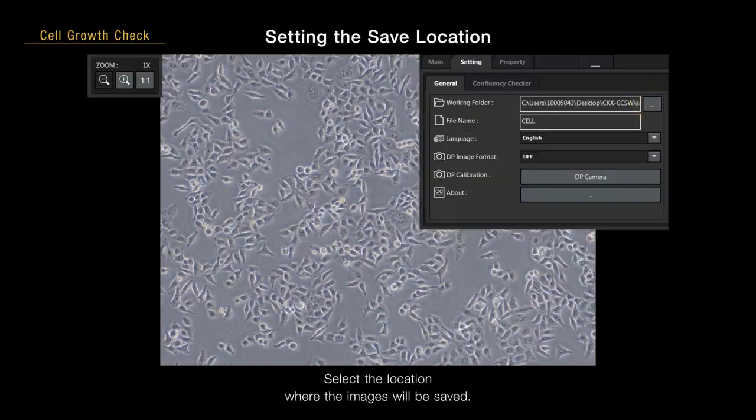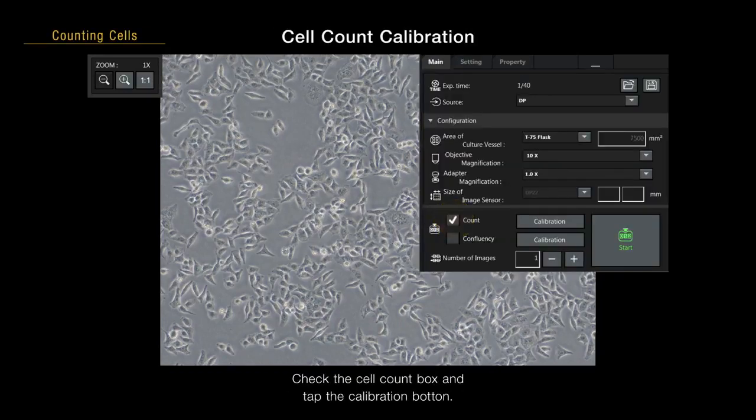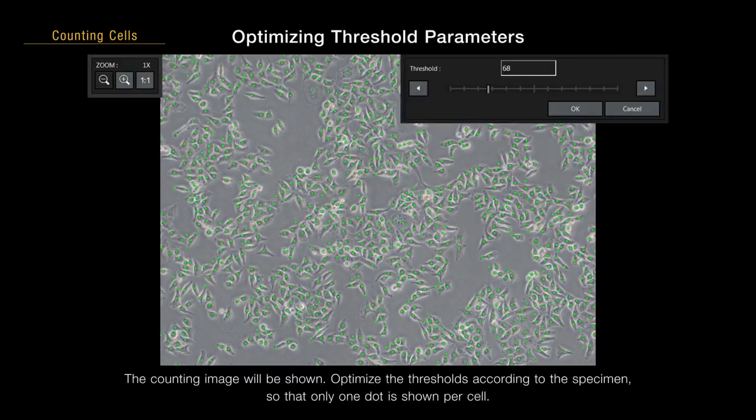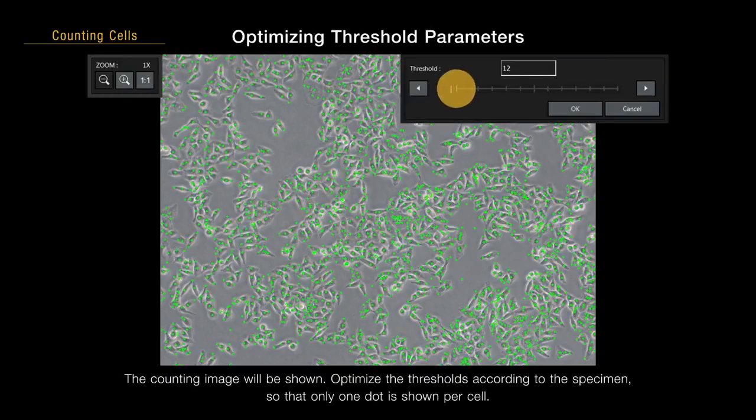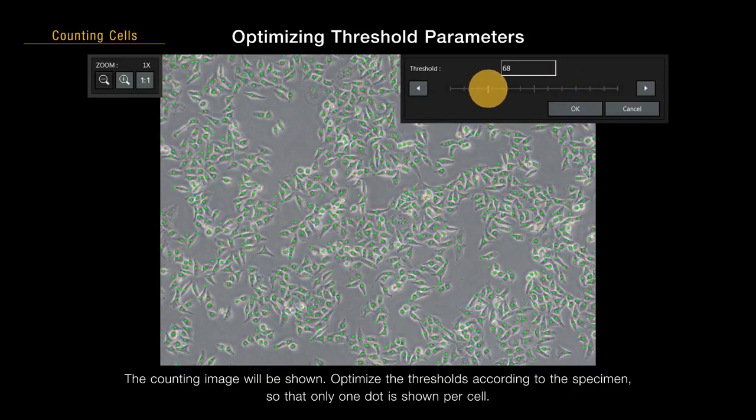Select the location where the images will be saved. Check the cell count box and tap the calibration button. The counting image will be shown. Optimize the thresholds according to the specimen so that only one dot is shown per cell.